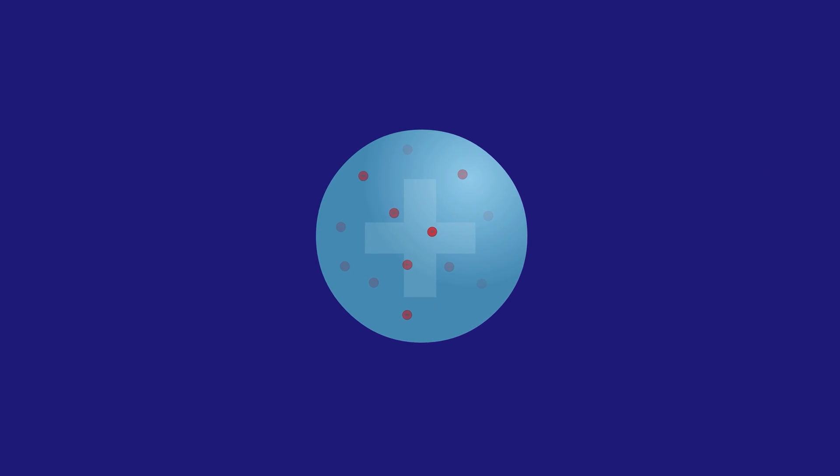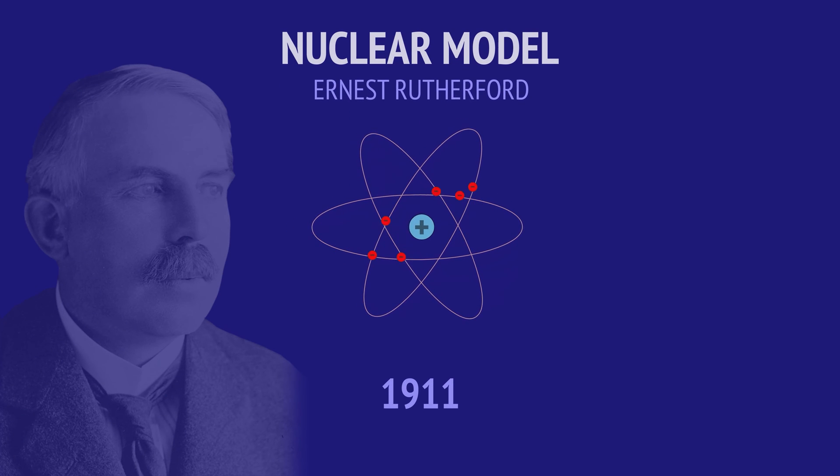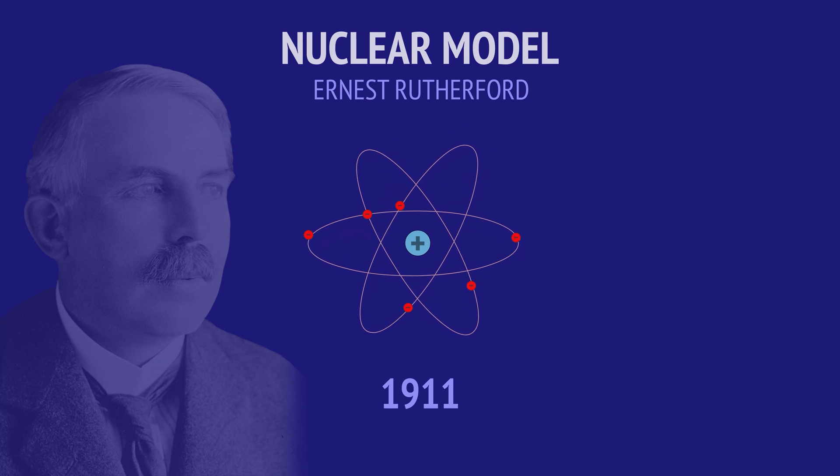In 1911, Ernest Rutherford discovered that all the atom's mass and positive charge were in fact concentrated in the centre of the atom, in a region he called the nucleus. The area around the nucleus consisted of mostly empty space except for the freely orbiting electrons. The evolution of these discoveries led in 1911 to the development of the nuclear model of the atom, in which a positively charged centre was surrounded by randomly arranged electrons.